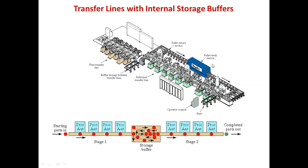This is the entire arrangement of the plant, showing how the work cycle proceeds using automated systems, robots, transfer lines, or AGVs. We have to maintain the motion of parts between station one and station two. The number of stages depends on the storage capacity of the buffer — if one storage buffer is used, the line is divided into two stages.